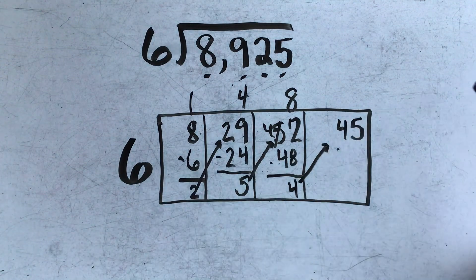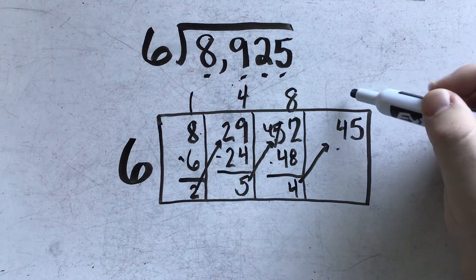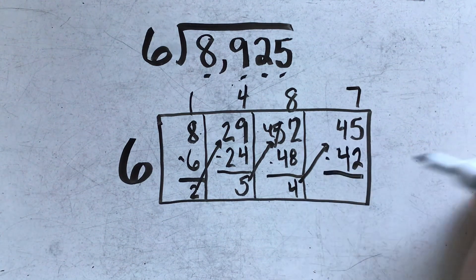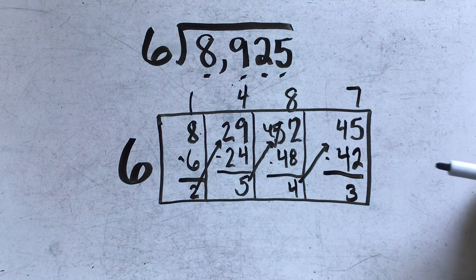And do one more division problem. 6 goes into 45, 7 times. 7 times 6 is 42. And when I subtract, there's 3 left over.